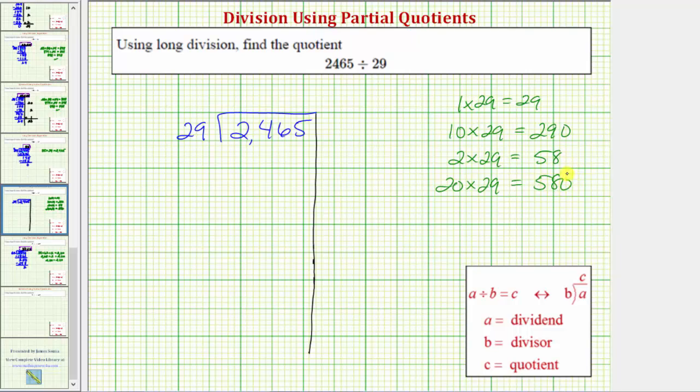But we still want to find at least one product that's in the thousands, or a product that's close to our dividend. So let's see if we can determine 5 times 29.